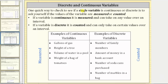Welcome to a lesson on discrete and continuous variables. One quick way to check if a single variable is continuous or discrete is to ask yourself if the values of the variable are measured or counted. If a variable is continuous, it is measured and can take on any value over a particular interval. If a variable is discrete, it is counted and can only take on certain values over a particular interval. And because it is counted, normally the values would have to be whole numbers, but this is not always the case.